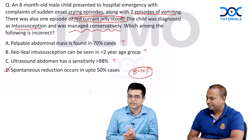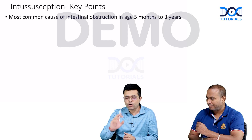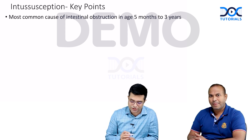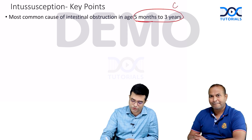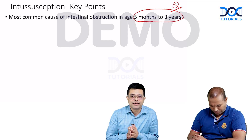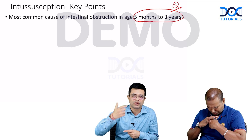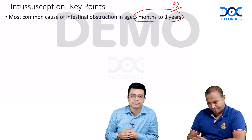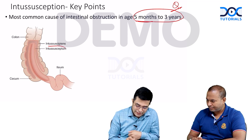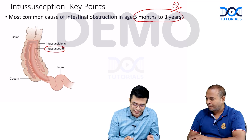What are the key points about intussusception for a rapid, quick revision? First, intussusception is the most common cause of intestinal obstruction in the age group of 5 months to 3 years. Secondly, what exactly happens: there is a lead point around which there is an invagination or telescoping of one intestinal segment upon itself. The part that goes inside is called the intussusceptum, whereas the receiving outer part is called the intussuscipiens.